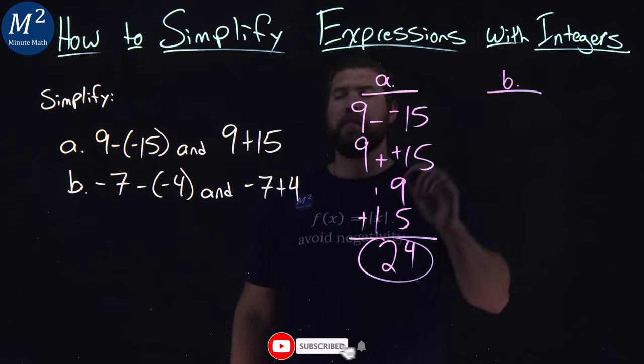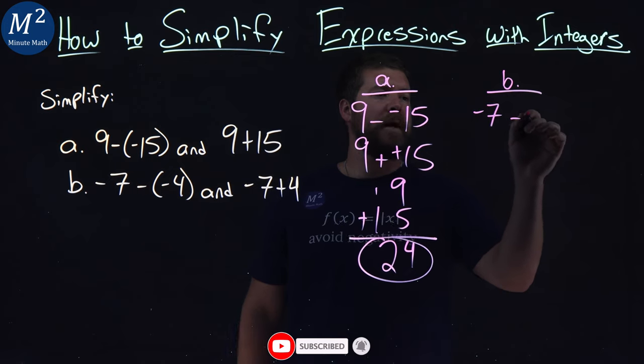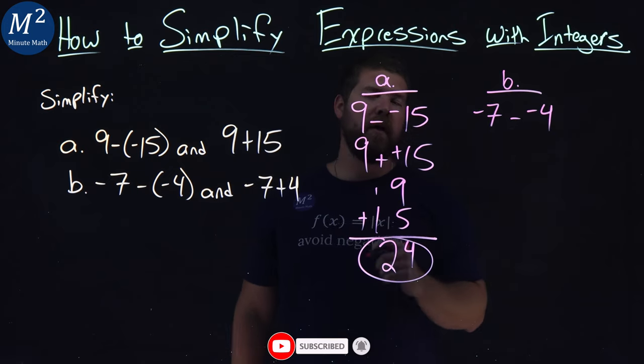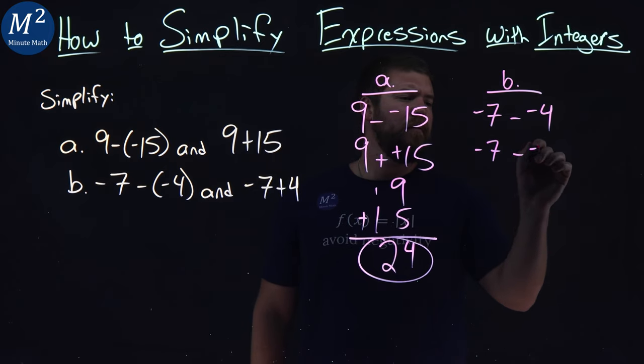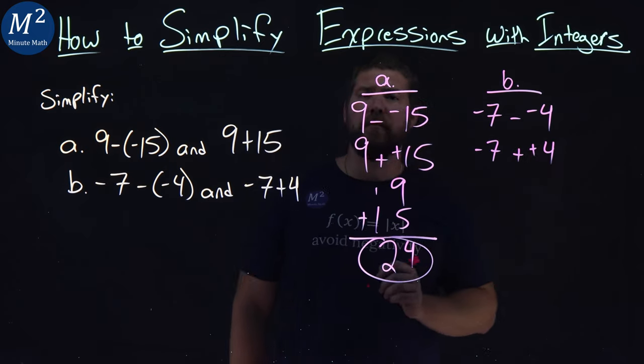Let's see the same thing with Part B. Negative 7 minus a negative 4. Notice I wrote without the parentheses here. And that's the same thing as negative 7, plus a positive 4.